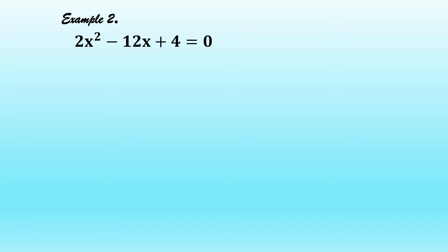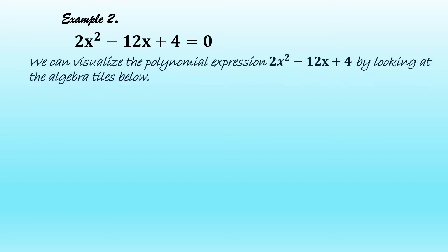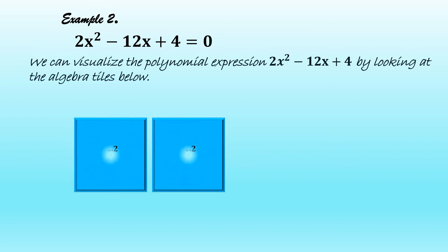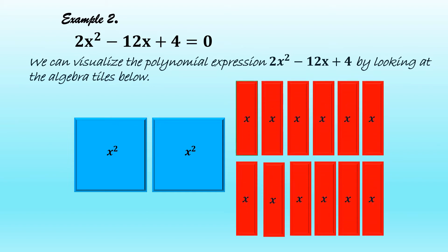The second quadratic equation that cannot be solved by extracting square roots or factoring is 2x squared minus 12x plus 4 equal to 0. We can visualize the polynomial expression 2x squared minus 12x plus 4 by looking at the algebra tiles below. We have two blue tiles to represent 2x squared, 12 red tiles to represent negative 12x, and 4 unit tiles to represent positive 4.